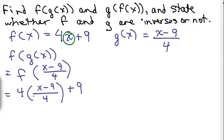So now we do order of operations. This is a multiplication here, and the 4s cancel. So that's nice. So we have x minus 9 plus 9. That equals x. So they are inverses.